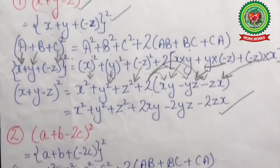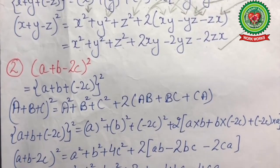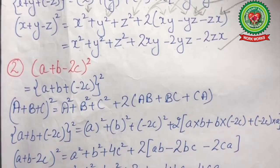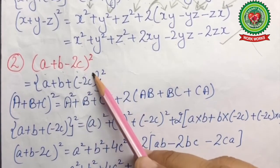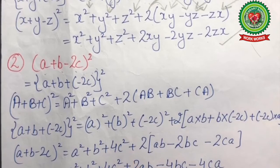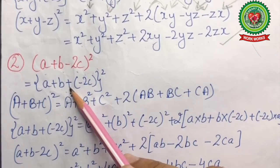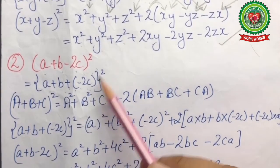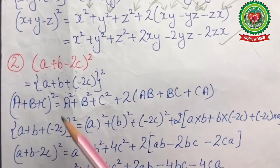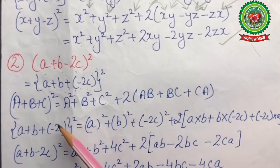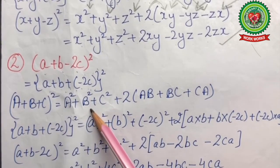Now we are going to discuss one more example of this type for better understanding. The next example is (a+b-2c)². Again, we rewrite this as (a+b+(-2c))², which is now in the form of (a+b+c)², equal to a²+b²+c²+2(ab+bc+ca).